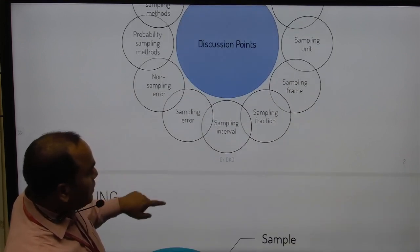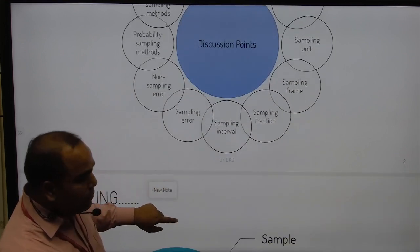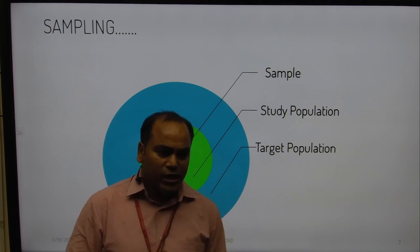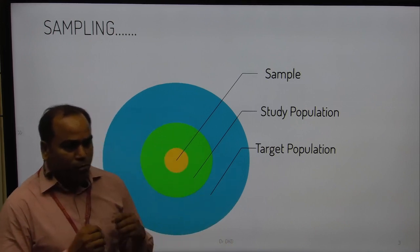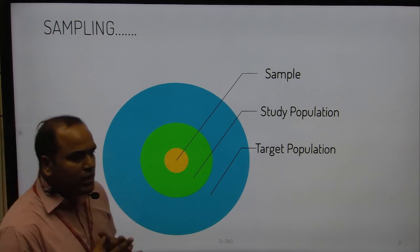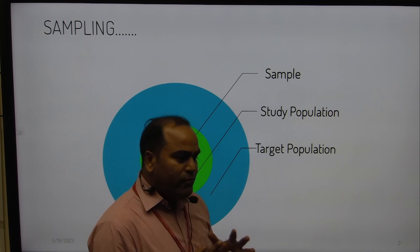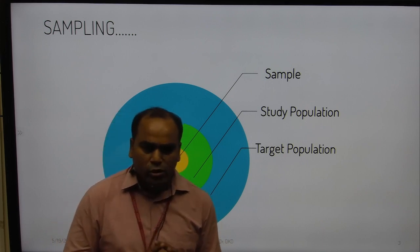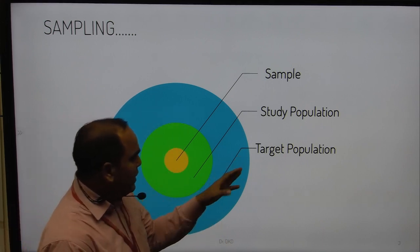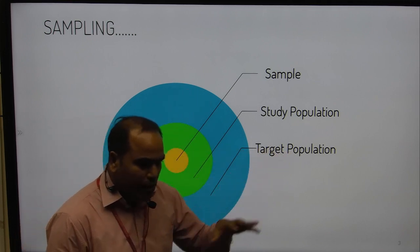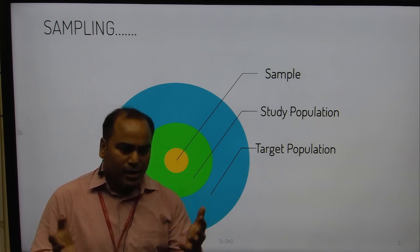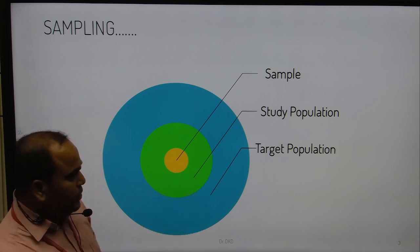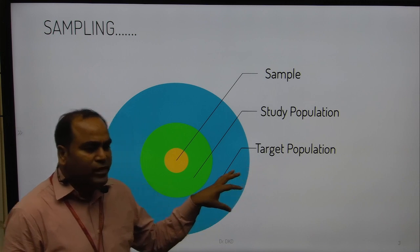For complete enumeration of the population, we need to first discuss what population is. Whenever we are going to plan any kind of study, we need to understand where to begin. First, we have to decide our target population — the area where we are going to conduct the study, such as Greater Noida, Uttar Pradesh, Delhi, or across India — for example, for a household survey with a particular objective.